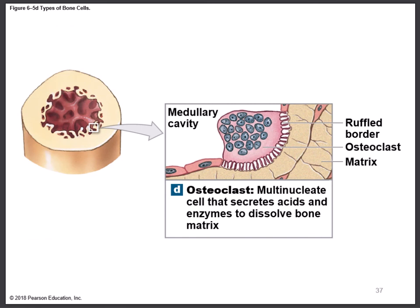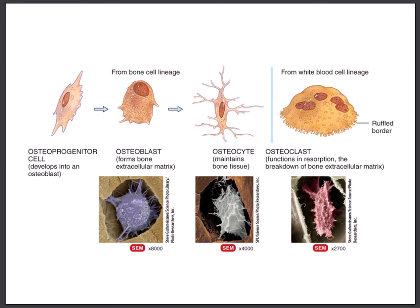In Tortora's diagram, a line shows the osteoclast is not produced from the other bone cells — it comes from the blood lineage. It's a large cell with multiple nuclei and a ruffled border where acids come out to break down bone. A microscope image shows it's large enough to be seen at only 2,700x magnification.